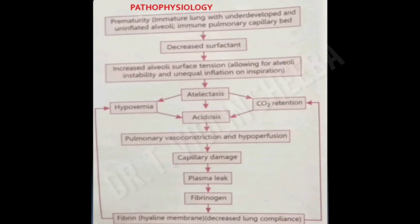Let us see the pathophysiology of RDS in detail. Due to etiological factors there will be decreased surfactant production. Decreased surfactant production increases the surface tension of the alveoli. When surface tension increases, the lungs cannot function properly, leading to collapse of the alveoli. This collapse leads to hypoxemia and carbon dioxide retention. Both of these lead to the formation of acidosis, which causes pulmonary vasoconstriction and hypoperfusion in order to compensate for the hypoxia.